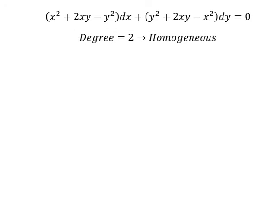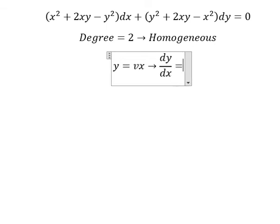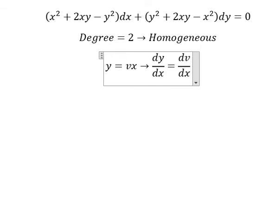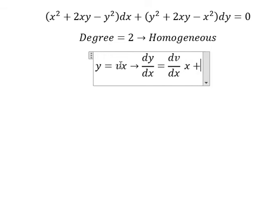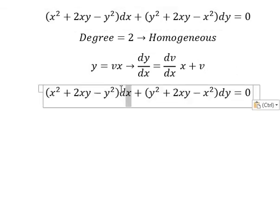So we have y equals vx. We do the first derivative for both sides: dy over dx equals the first derivative of v, which gives dv over dx multiplied by x, plus v. Then we divide both sides by dx.